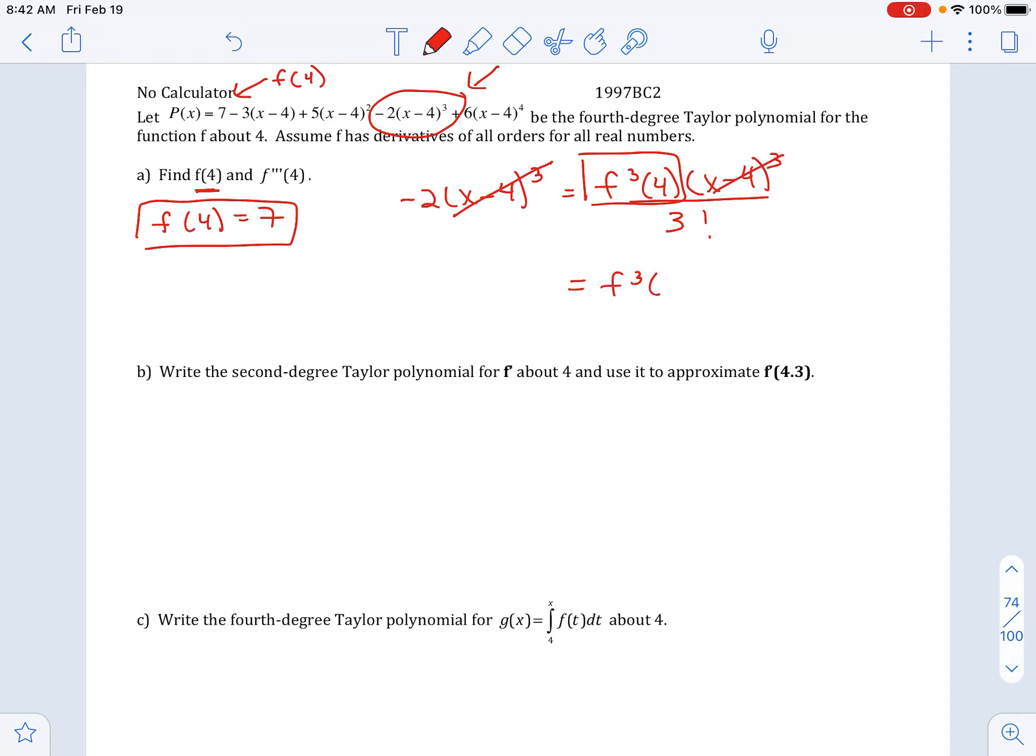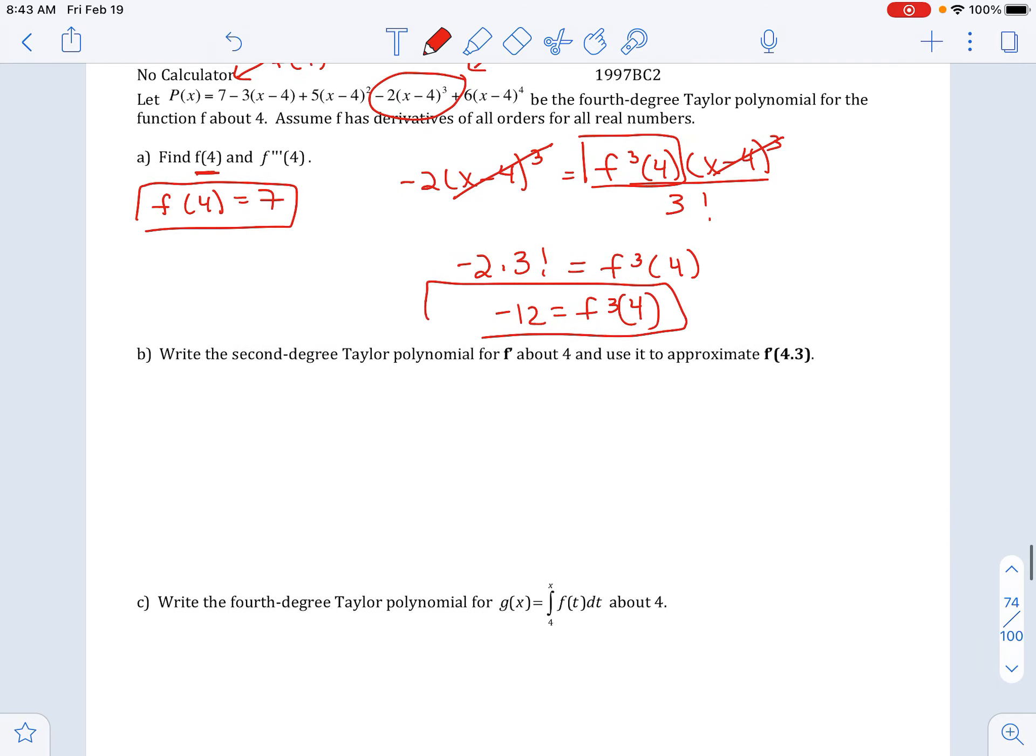Move the 3 factorial over. So really, negative 2 times 3 factorial is the third derivative. If you want to simplify it, it's the same as 12.